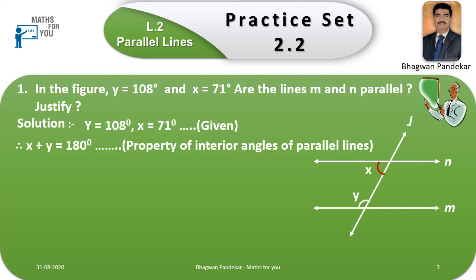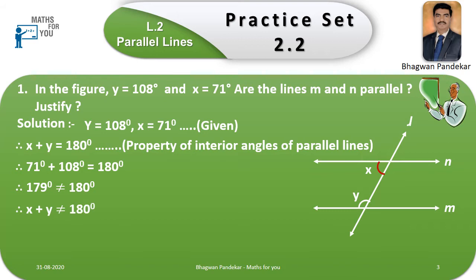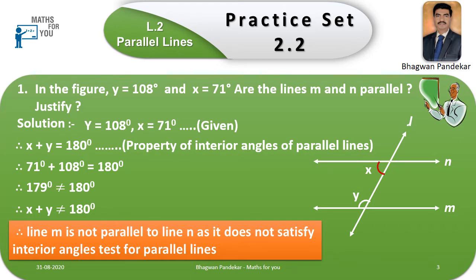Putting the values of x and y in the equation: 71° + 108° = 179°. Therefore, 179° is not equal to 180°, so x + y ≠ 180°. Therefore, line m is not parallel to line n, as it does not satisfy the interior angle test for parallel lines.